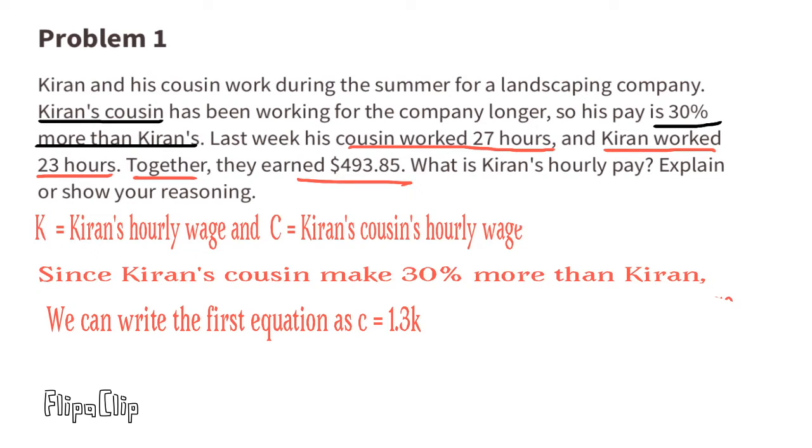This represents 100% of what Kiran earns and 30% of what Kiran earns. The second equation is 27C plus 23K equals 493.85.